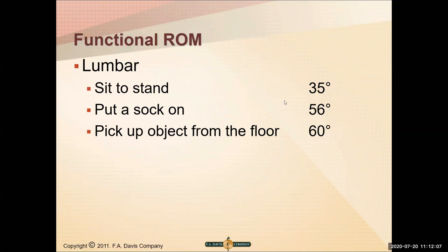For functional range of motion, sit-to-stand requires about 35 degrees of lumbar flexion. To put socks on, you need about 56 degrees of lumbar flexion to reach down. This becomes clinically significant if a patient has had a spinal fusion and is wearing a Jewett brace that prevents bending forward.